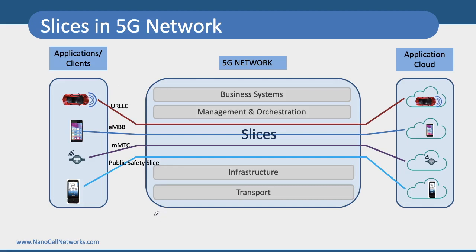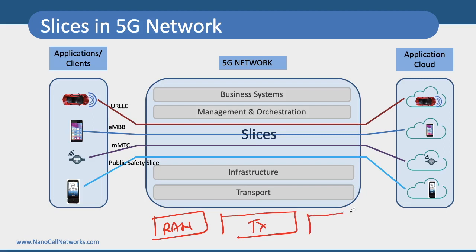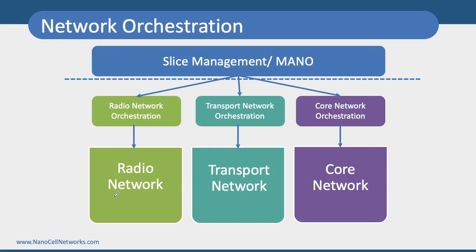Implementing network slicing requires a lot of coordination — in the radio access network, in the transport network, and in the core network. So we need a Management and Network Orchestration plane that can efficiently manage all of these. We will have a radio network with radio network orchestration on top, a transport network with transport network orchestration, and a core network with core network orchestration. All of these are managed by a centralized MANO, which handles slice management.